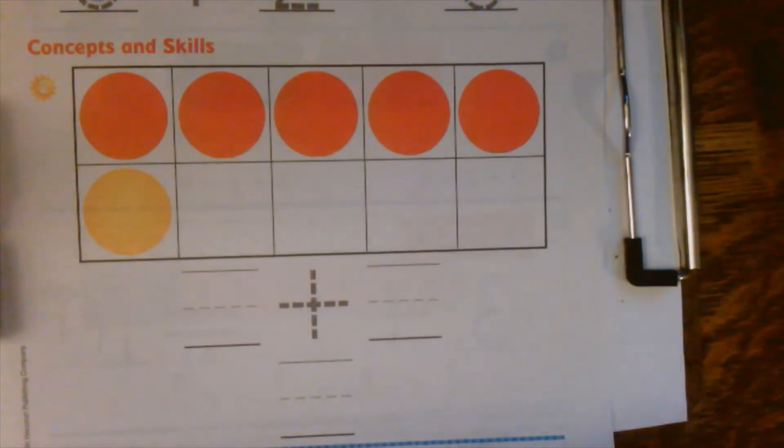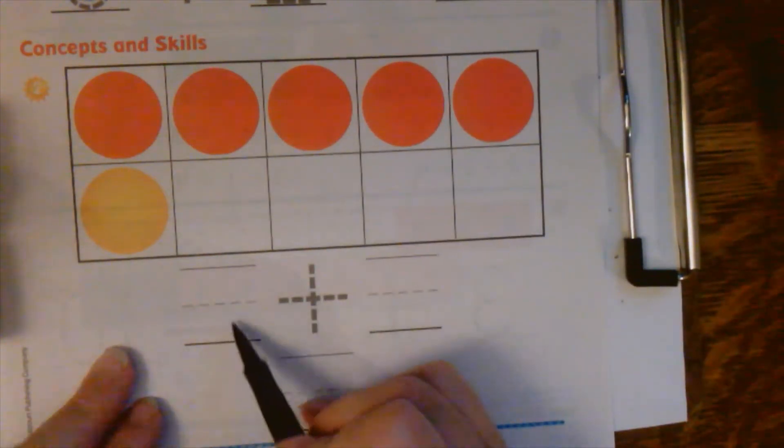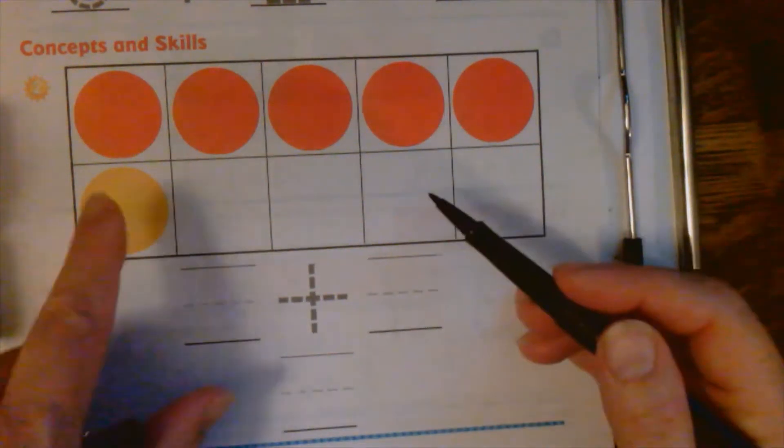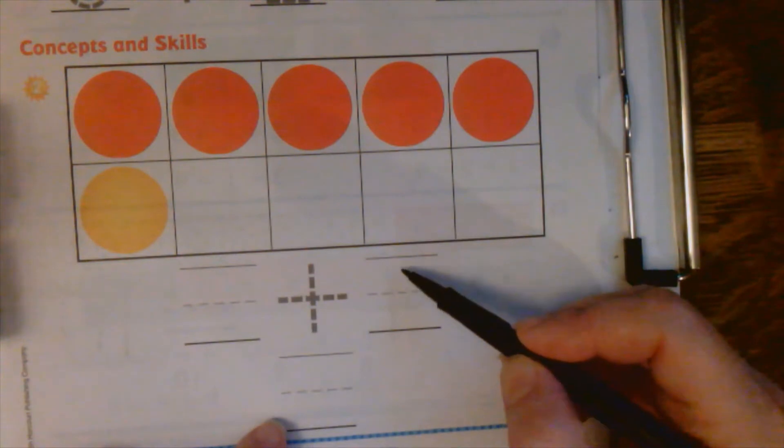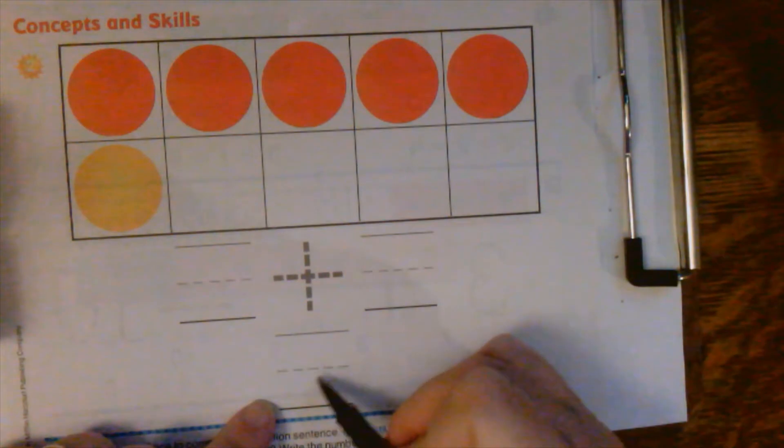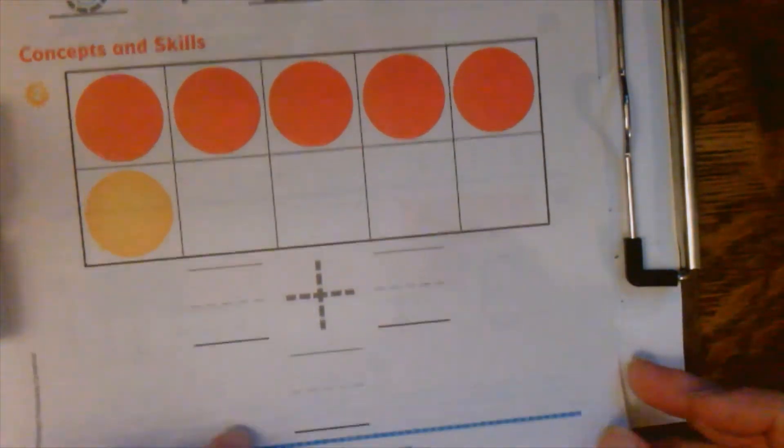Let's take a look here. What do we see in this 10 frame? How many are up here? Write that number right here. You probably don't even have to count them because you know a full row, right? How many yellow ones here? Then how many counters is that all together? Go ahead and write that number right there. Pause the video if you need to to catch up. Otherwise, turn the page.